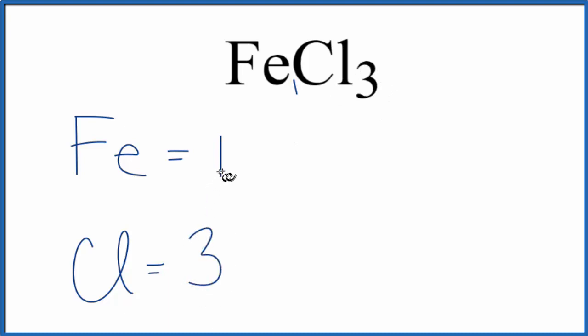If you wanted to know the total number of atoms for FeCl3, you just add these up. Three plus one, that gives you four total atoms for iron three chloride.